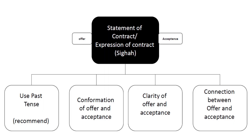For offer and acceptance — the third pillar — the requirements include: using the past tense, which is recommended; confirmation of the offer and acceptance; clarity of the offer and acceptance; and confirmation of the connectivity of the offer and acceptance, known as majlis.